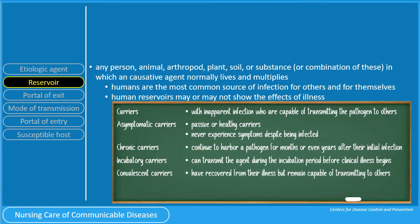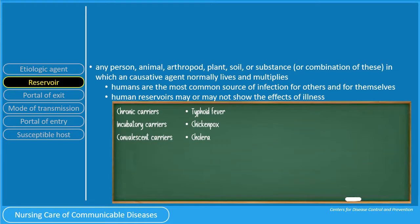Convalescent carriers have recovered from their illness but remain capable of transmitting to others. Convalescent carriers occur when the period of infectiousness extends beyond the period of clinical illness. Carriers of this type can be a significant issue in promoting the spread of certain enteric infections such as those caused by Vibrio cholera. To summarize the classic examples of carriers: typhoid fever — chronic carriers; chickenpox — incubatory carriers; and cholera — convalescent carriers.